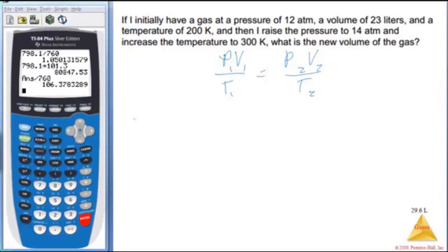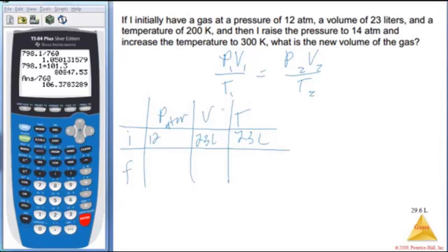What I like to do, as my kids from last year know, is I like to make a table where I put pressure, volume, and temperature. I put my initial values and my final values and just kind of think through it rather than trying to memorize equations. So initially we say we have 12 atmospheres, we have 23 liters and a temperature of 200 K. I raise the pressure to 14 atmospheres, increase the temperature to 300, and the question is what happens to my volume of my gas.